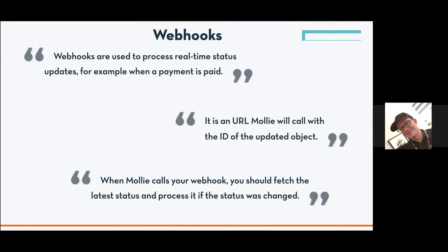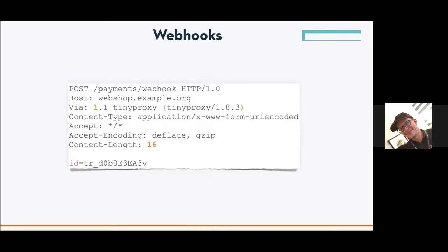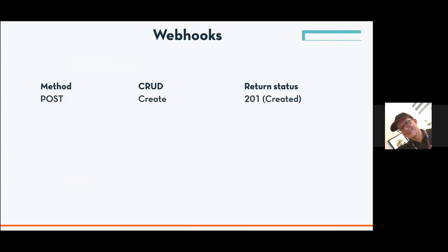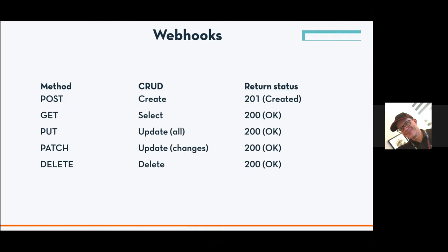Looking further at the documentation, Mollie uses a POST to call your webhook and passes an HTTP variable with the ID. With this information we can create a webhook. Normally with a POST you return 201 (created), but for webhooks we use POST just to say 'hey, there is new information for you, do something with it' — we're not creating something. So instead of returning 201, Mollie expects a 200, which is something we need to change in our process.